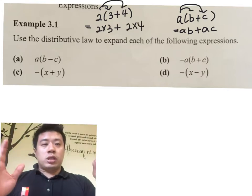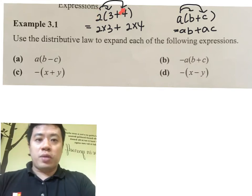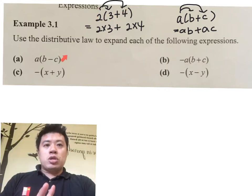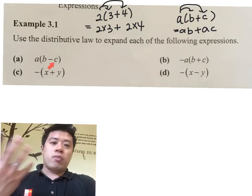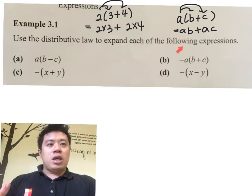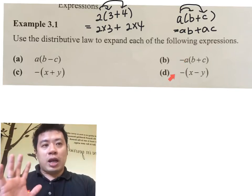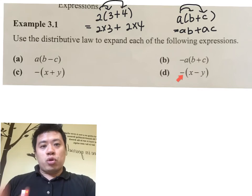You distribute the 2 to the 3 and to the 4. If it's a minus, it's a minus. If there's a negative sign, we distribute the negative sign. If it's negative A, we distribute negative A or negative 1. And if there's a negative sign outside, treat it as multiplying by minus 1.